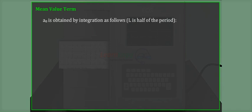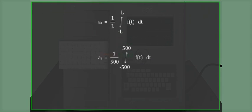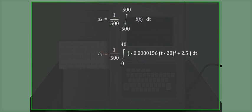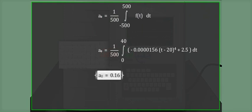Mean value term a₀ is obtained by integration as follows. L is half of the period. a₀ equals 1 divided by L, integral from minus L to L of f(t) dt. a₀ equals 1 divided by 500, integral from minus 500 to plus 500 of f(t) dt. By substituting the values, we get a₀ equals 0.16.